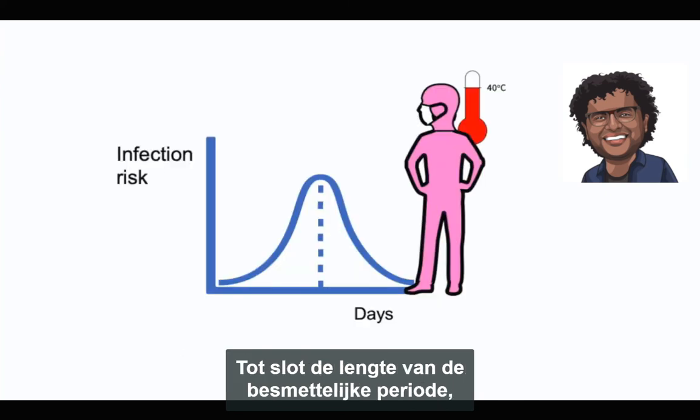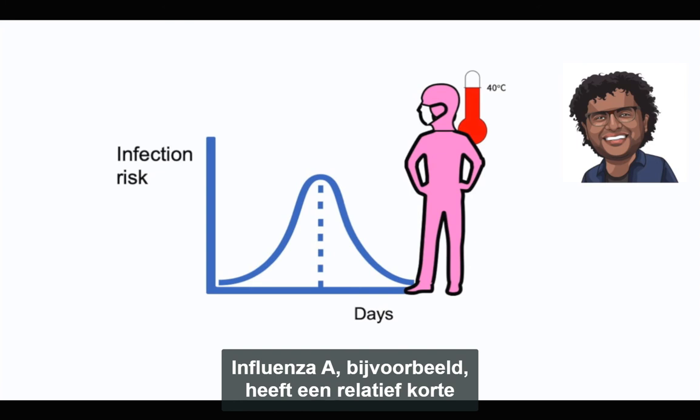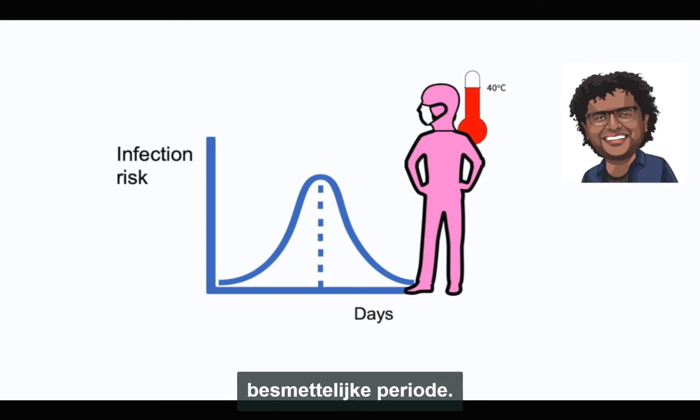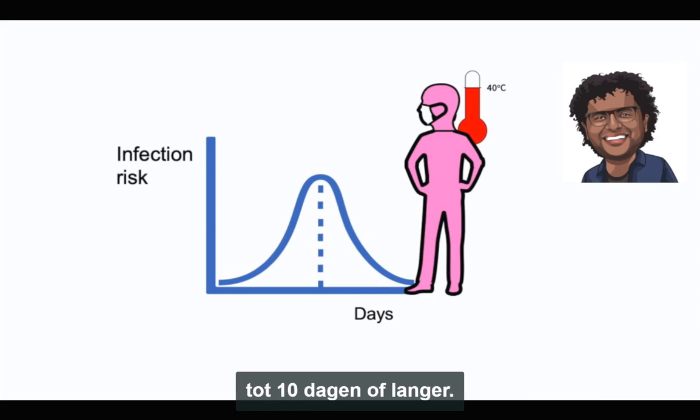Lastly, the length of the infectious period for COVID-19 remains an uncertainty. For instance, influenza A has a relatively short infectious period, but in the case of COVID-19, it may last up to 10 days or longer.